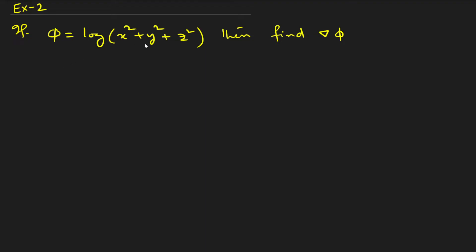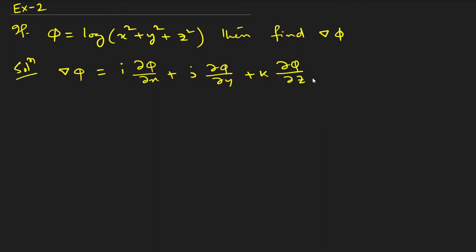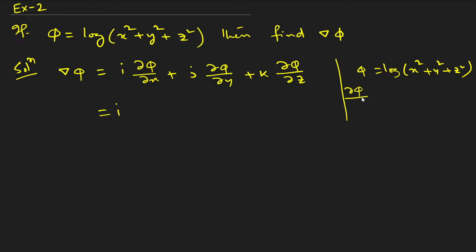In the second problem, φ = log(x² + y² + z²). We need to find ∇φ. The gradient is again i-cap (∂φ/∂x) + j-cap (∂φ/∂y) + k-cap (∂φ/∂z). Recall that the derivative of log(x) is 1/x.